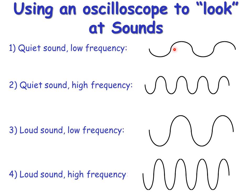If it's not very tall from the middle to the top, it has a low amplitude, and this means it's a quiet sound. If there aren't many waves — only two complete waves — then it has a low frequency. The second wave might be the same height but has twice as many waves, and therefore it's a higher frequency — in fact, it's twice the frequency.